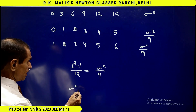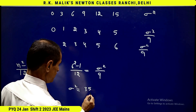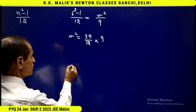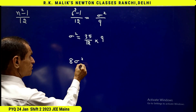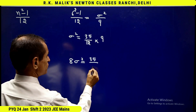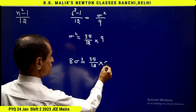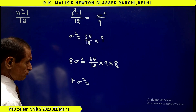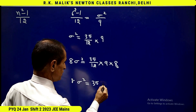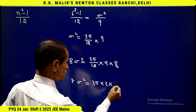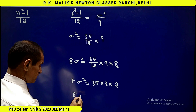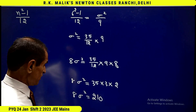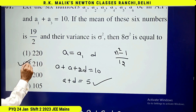Hence the value of sigma square is 35 by 12 into 9. Therefore, the value of 8 sigma square will be 35 by 12 into 9 into 8, which equals 35 into 3 into 2, giving 8 sigma square equal to 210. Hence the correct choice is the second option.